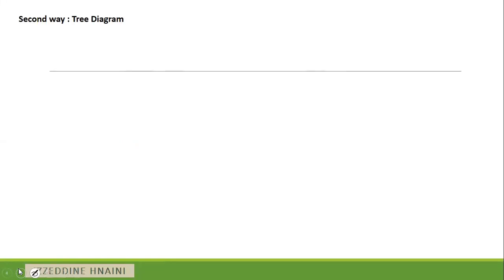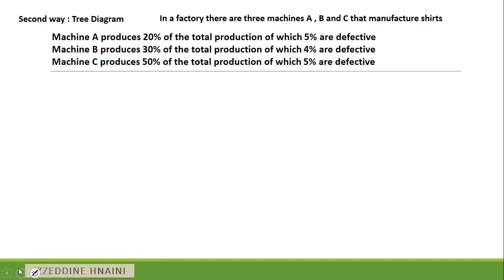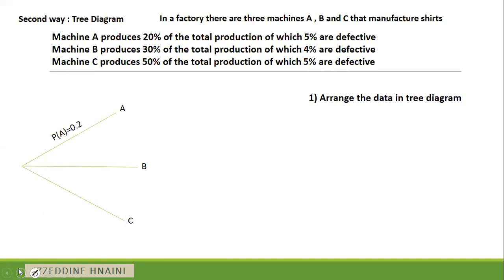Now, we want to solve this question by another way: using the tree diagram, which is the objective of this video. We have three machines: machine A, machine B, and machine C. Machine A produces 20% of the items, so the probability that the item is from A is 0.2. Machine B produces 30%, so P(B) = 0.3. Machine C produces 50%, so P(C) = 0.5.